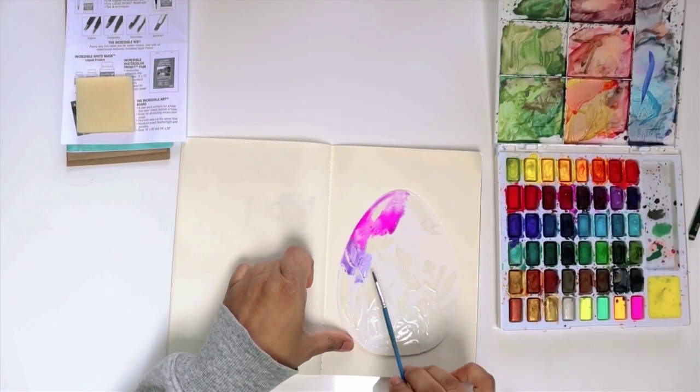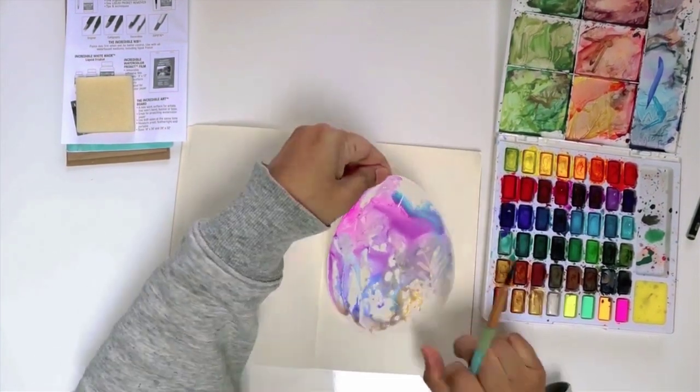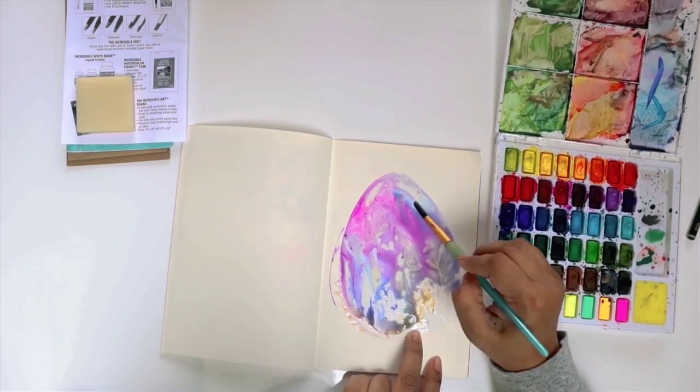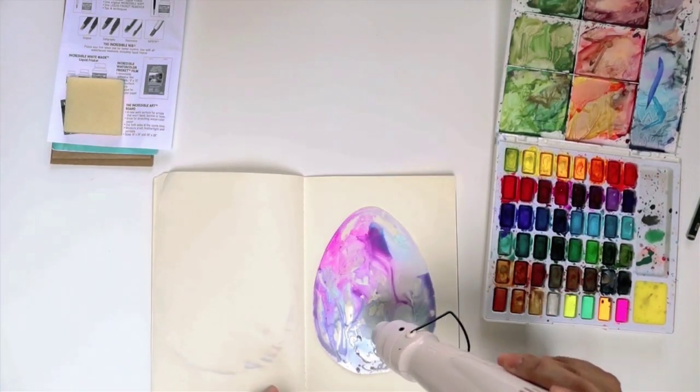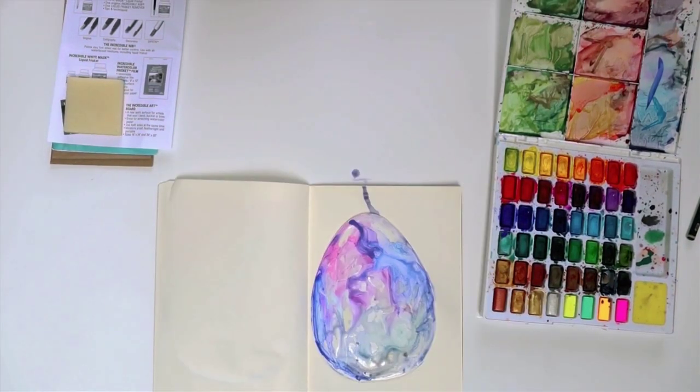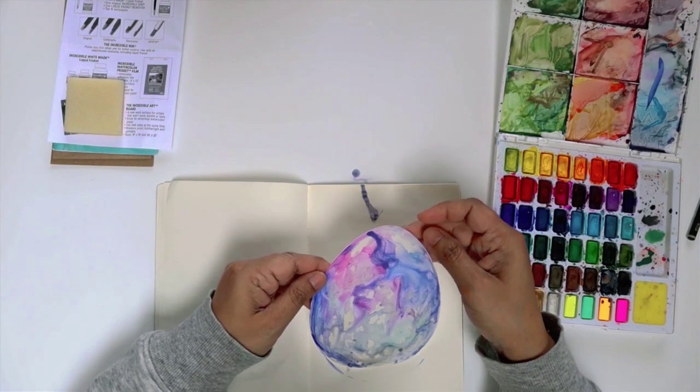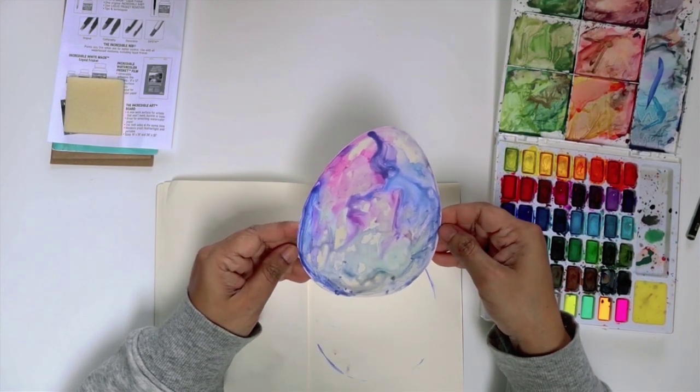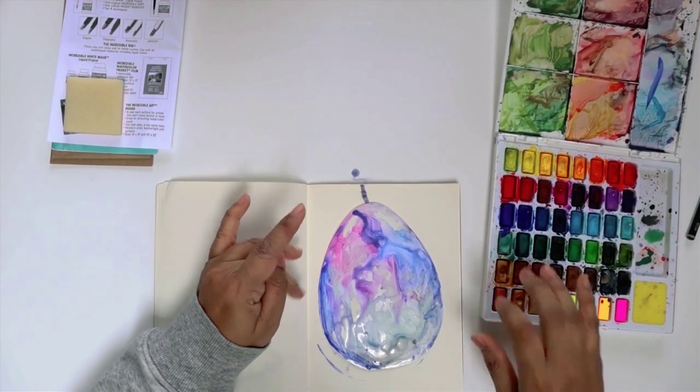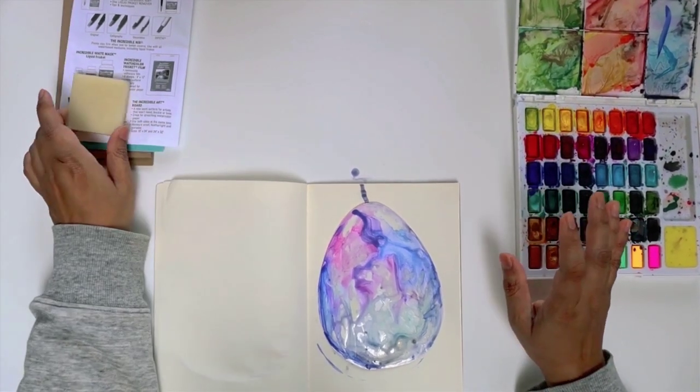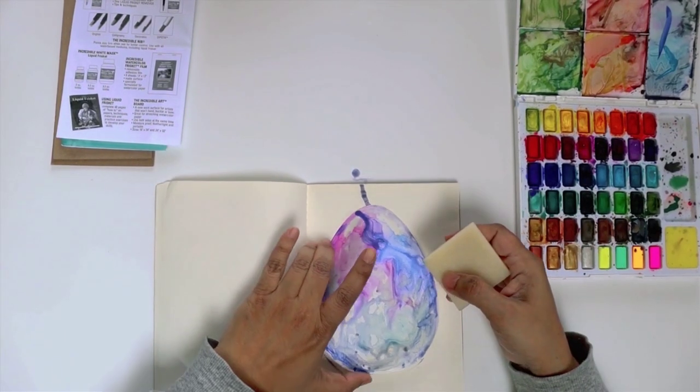As you can see, the frisket is protecting the design. It says on the product that it is very important for the paper or the surface to be dry before we try to remove the frisket. Now that I'm working on a plastic surface, I'm slightly worried that it might pull up some of the watercolor paint from underneath once I do it. I will know.